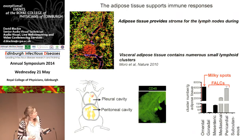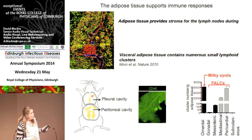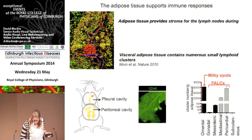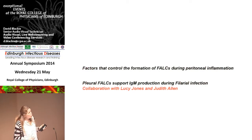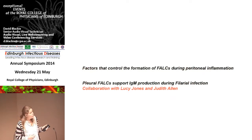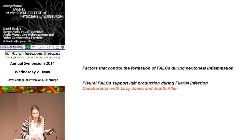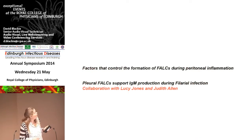The best way to find those lymphoid clusters is to do immunostaining. If you put an antibody against CD45, you will see those lymphoid clusters illuminated here in green. In this talk I will discuss the factors that control the formation of FALCs — fat-associated lymphoid clusters — during peritoneal inflammation, and in the second part I will talk about the pleural FALCs and how they support production of IgM during filaria infection. This work has been done in collaboration with Lucy Jones and Judy Allen.